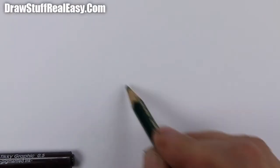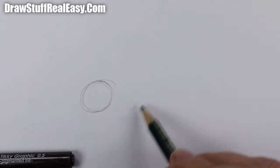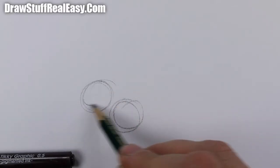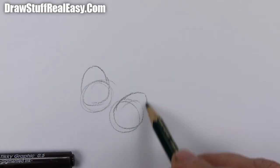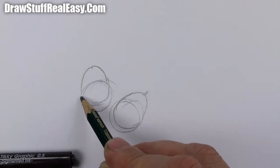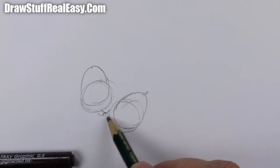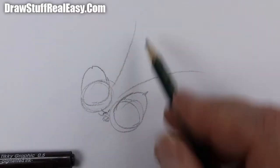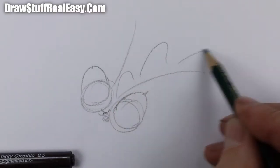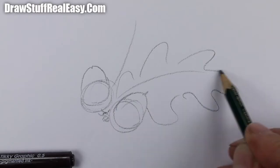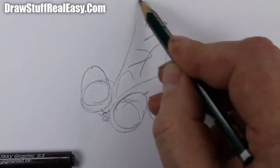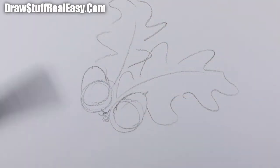Hi there, welcome to Draw Stuff Real Easy on YouTube. Today I'm going to show you how to draw a couple of acorns and a couple of oak leaves. Why would you want to do that? Well, it's nearly Thanksgiving.